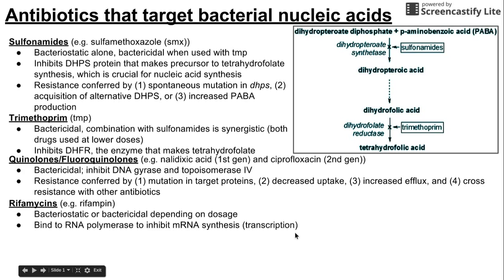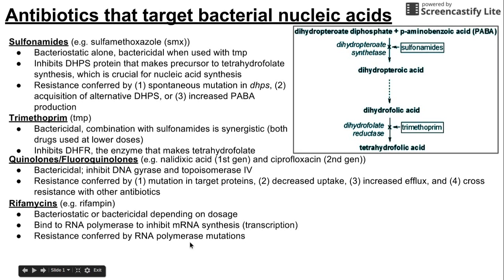To get resistance to rifamycins, a mutation in RNA polymerase — the enzyme that these rifamycins bind to — is the key mechanism.